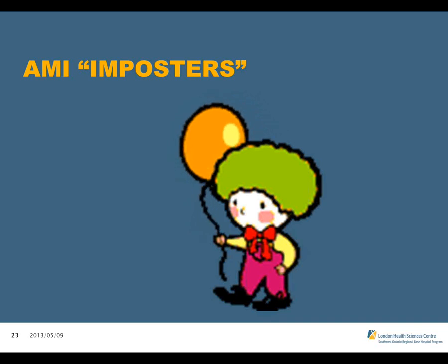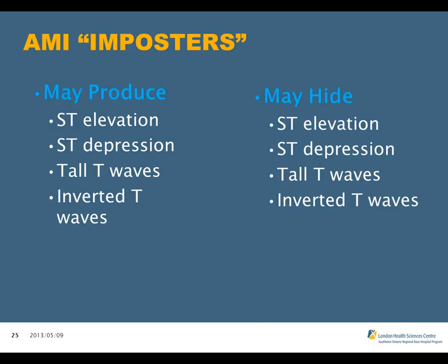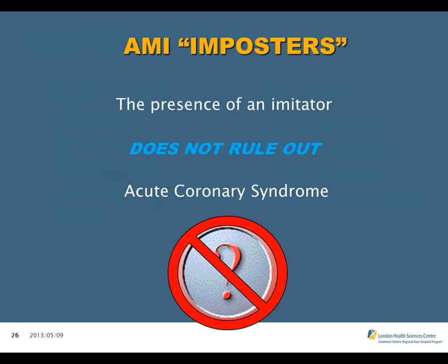Now we'll visit some AMI imposters — the most common ones and how to distinguish them from an actual MI. The ones we'll discuss today are ventricular hypertrophy, bundle branch blocks, certain medications, and pericarditis. AMI imposters may produce ST elevation, ST depression, tall T waves, or inverted T waves, but they may also hide these — masking the signs of an MI. The key message is: the presence of an imitator does not rule out acute coronary syndrome. Always err on the side of acute coronary syndrome when assessing your patients.